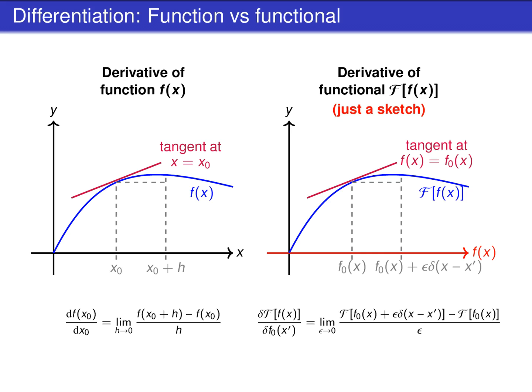However, the right plot is just a sketch to provide an illustration of a functional derivative. It is unclear what the horizontal axis for the functions means. The problem is that there is no clear ordering for functions as exists for the real numbers. Furthermore, the definition for the functional derivative shown here is illustrative but not mathematically rigorous. We will therefore now consider a rigorous definition of the functional derivative.